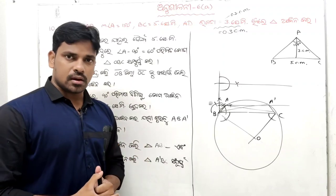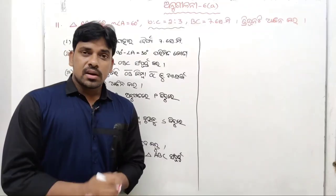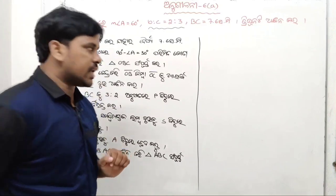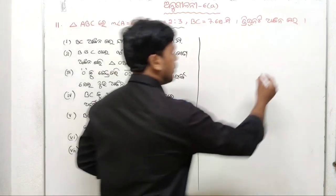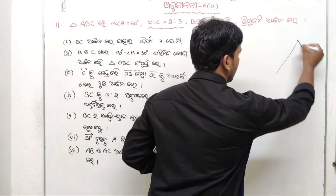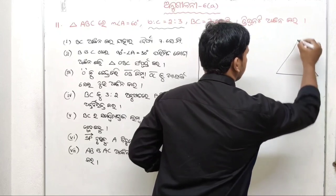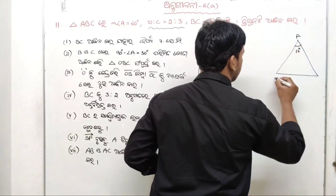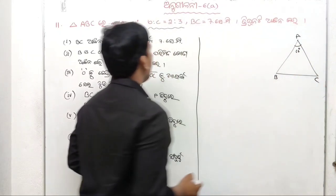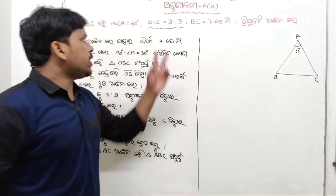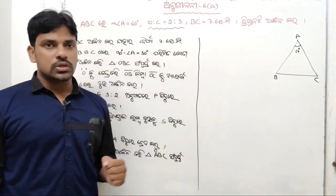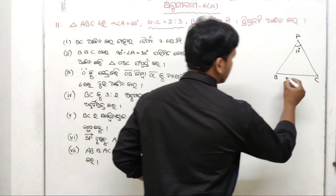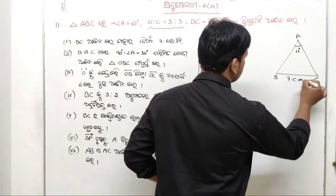So, number 11. We will start with number 11. I am going to try to do ABC at 7 degrees. And the important point is BC 2 to 3, BC 7 7. ABC 7 7.